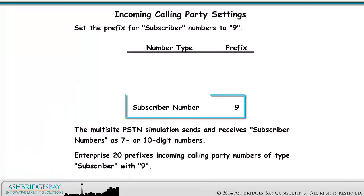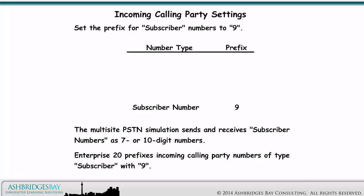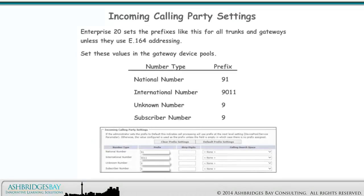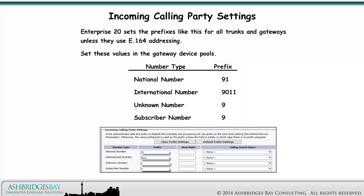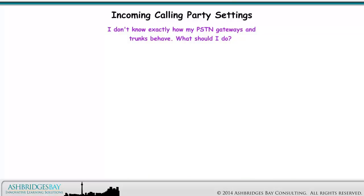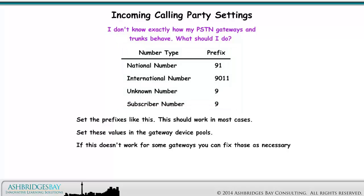And finally, set the prefix for subscriber numbers to 9. The multi-site PSTN simulation sends and receives subscriber numbers as 7 or 10-digit numbers, so Enterprise 20 prefixes incoming calling party numbers of type subscriber with 9. Enterprise 20 sets these prefixes for all trunks and gateways unless they use E.164 addressing — set these values in the gateway device pools. If you don't know exactly how your PSTN gateways and trunks behave, set the prefixes like this; it should work in most cases. If it doesn't work for some gateways, you can fix those as necessary. It's way better than doing nothing.